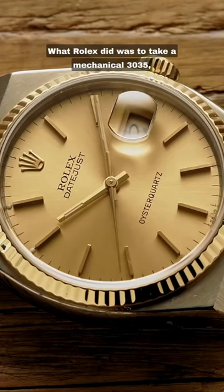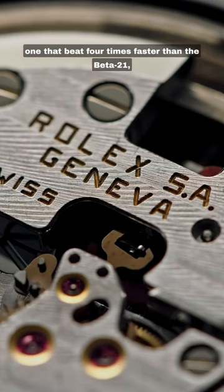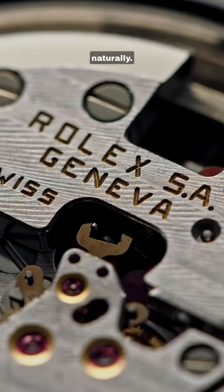What Rolex did was to take a mechanical 3035, throw the escapement away and add a Quartz oscillator, one that beat four times faster than the Beta 21 naturally.